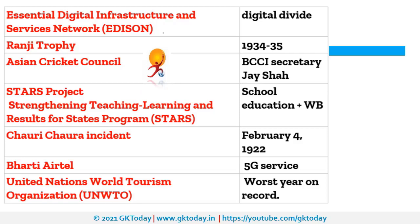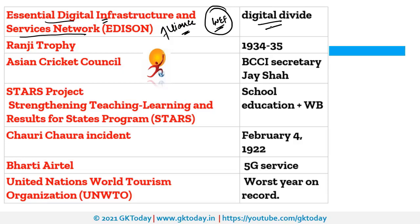Edison Alliance — which stands for Essential Digital Infrastructure and Services Network — is an alliance launched by WEF, the World Economic Forum, to reduce the digital divide. Digital divide refers to the gap between those who can access technology and those who cannot. This alliance will be chaired by Hans Vestberg, who is the CEO of Verizon.